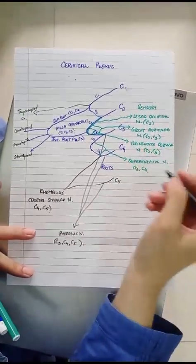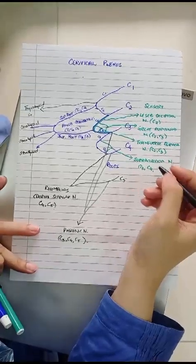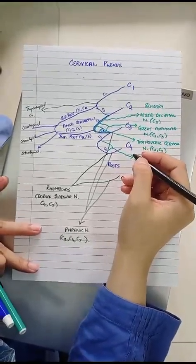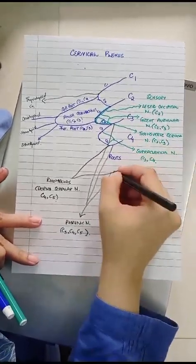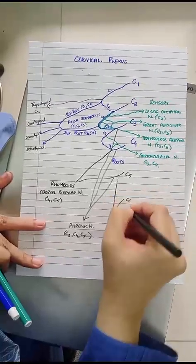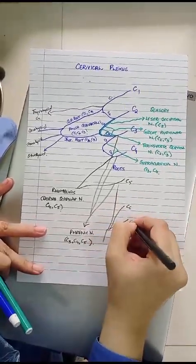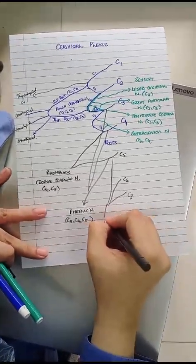Contributions also go to the pre-vertebral muscles and another branch that supplies the serratus anterior muscle. That is a contribution of C5, C6 and C7 which is the long thoracic nerve.